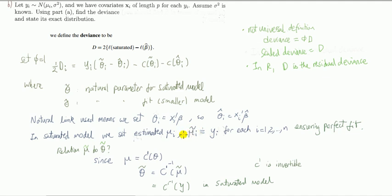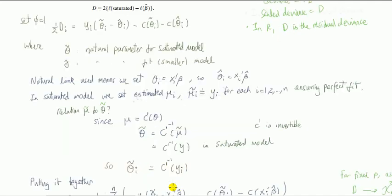But what is the relationship of the mu's to the theta? Well, we know I've proved it that the mean of response is equal to this. So since c prime, the derivative of the c here, the first derivative, is invertible, we'll get this. But mu is equal to the observation, so it simplifies. So we can write it like this.